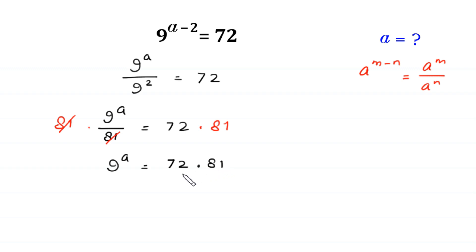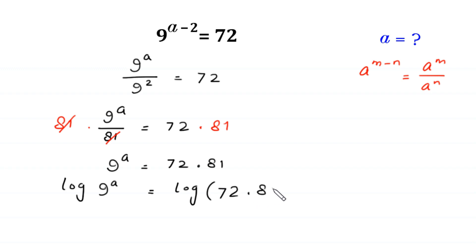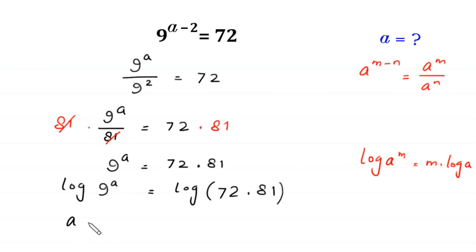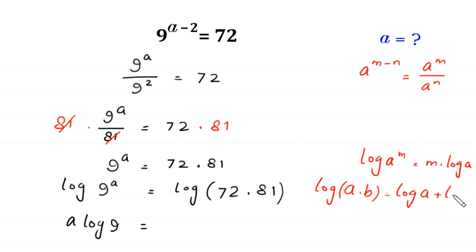Now, from here we take the log of both sides: log of 9 to the power a is equal to log of 72 times 81. By using the log property log of a to the power m is equal to m times log of a, log of 9 to the power a becomes a times log of 9. And by using the log property log of a times b is equal to log of a plus log of b, log of 72 times 81 becomes log of 72 plus log of 81.